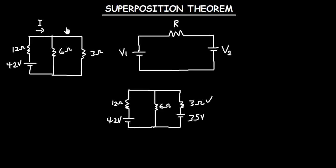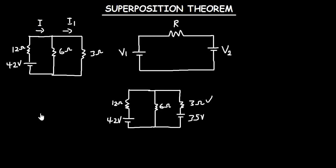So we are going to consider the 42 volt source acting alone. Let's name the total current as I and the current through the 3 ohms resistor as I1. Now, to calculate for this current I1, you first have to calculate for I, which is the total current in the circuit.